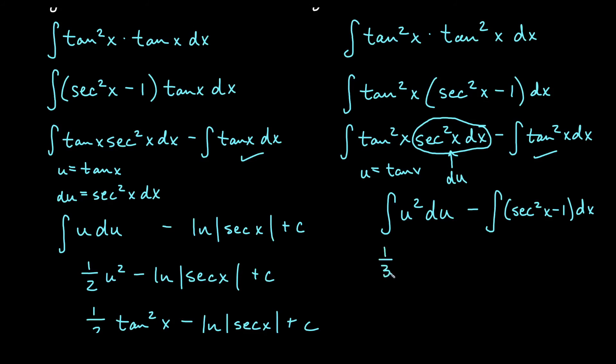Notice we'll have a negative in the front. This one becomes 1 third u cubed minus, and then think about what we have here. We have the antiderivative of secant squared x, which is just tangent x, and the antiderivative of negative 1, which would be negative x. We have our constant of integration. I'll go back and replace my u with the tangent x. So that'll be 1 third tangent cubed x minus tan x plus x plus c for this last one.